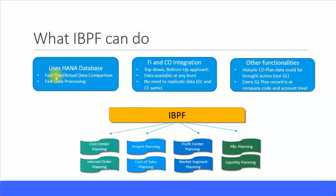With Simple Finance there is seamless integration between the FI and CO modules. You can do planning via a top-down approach or a bottom-up approach. For example, you can plan at the cost center level and take it up to the cost center group level, or from the top level go down to lower levels. You can also plan at cost center levels and break it down to the actual GL account levels, with data available at any level — groups of cost centers, GL accounts, profit centers, internal orders, or projects.